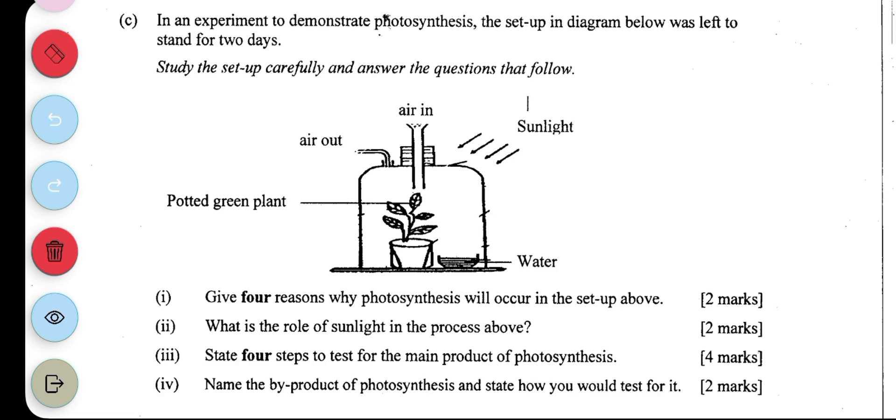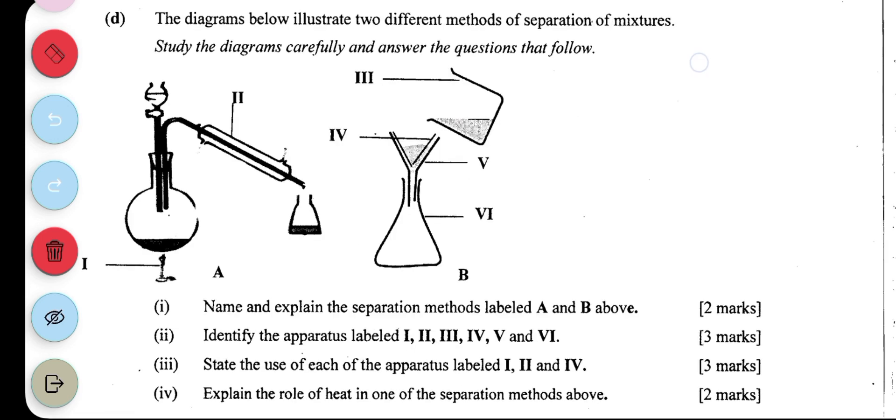It reignites. Oxygen reignites the glowing splint. The diagrams below illustrate two different methods of separation of mixtures. We have A and we have B. Name and explain the separation methods labeled A and B above. You don't need to write as much. You always need to be very concise and make sure you are hitting the main points.